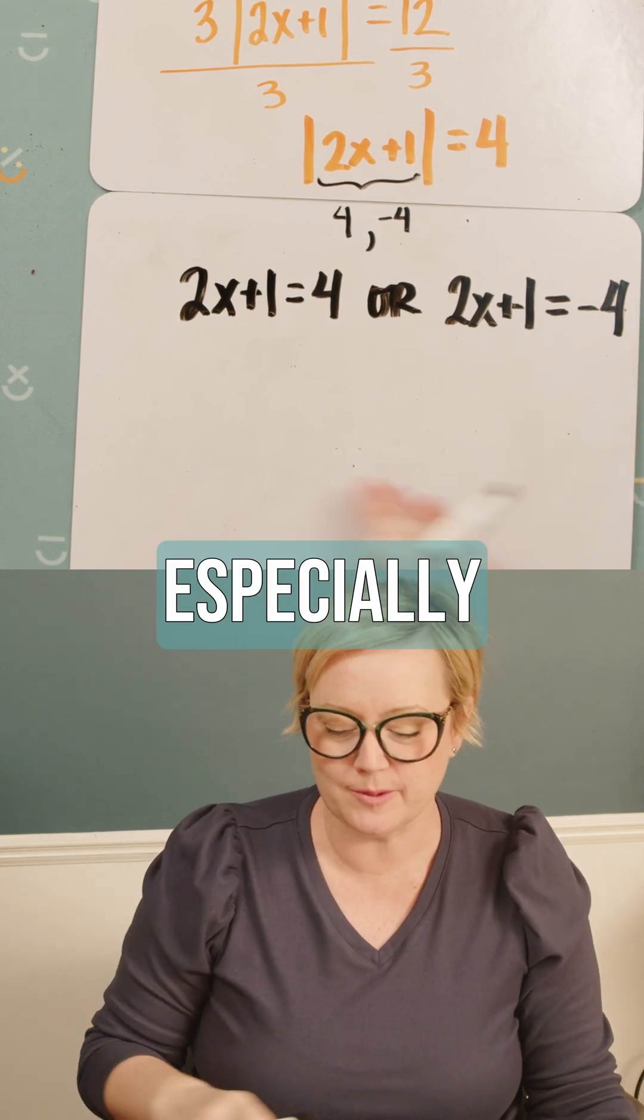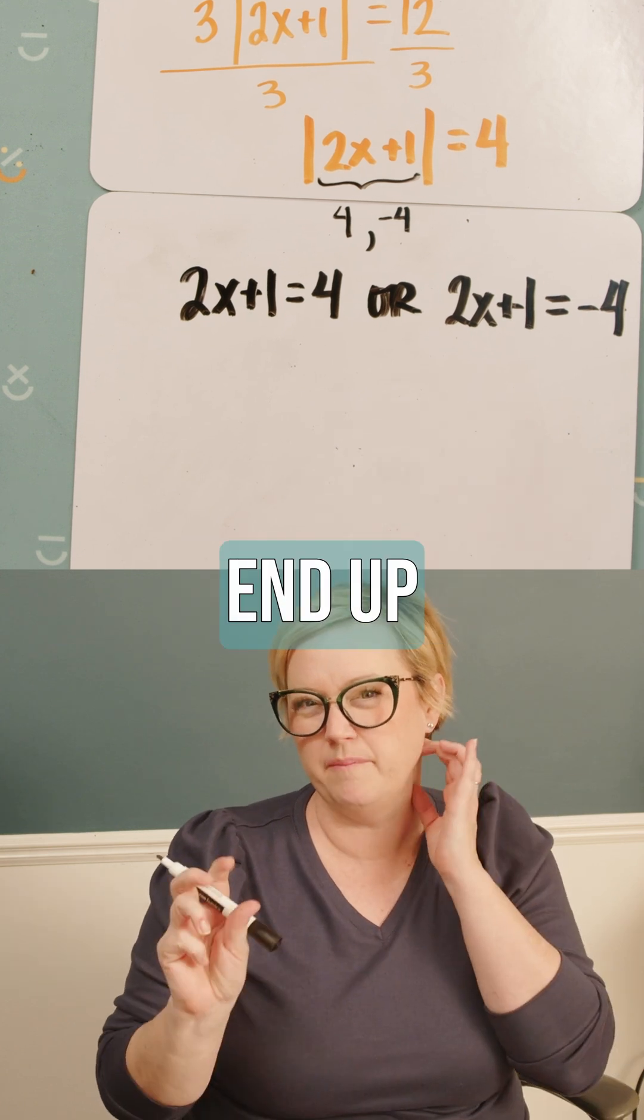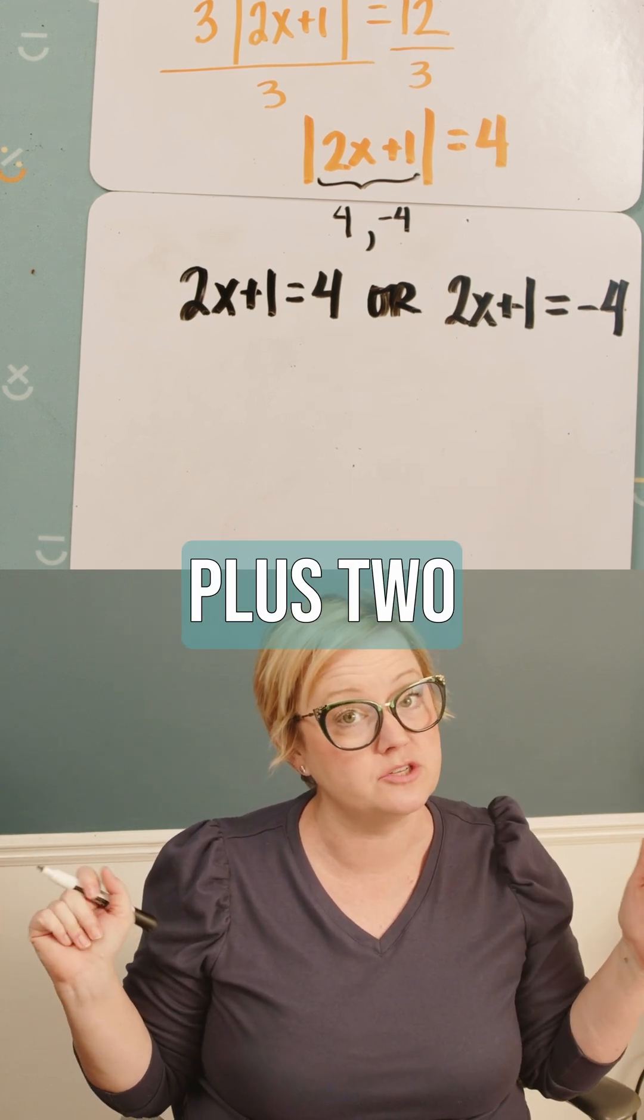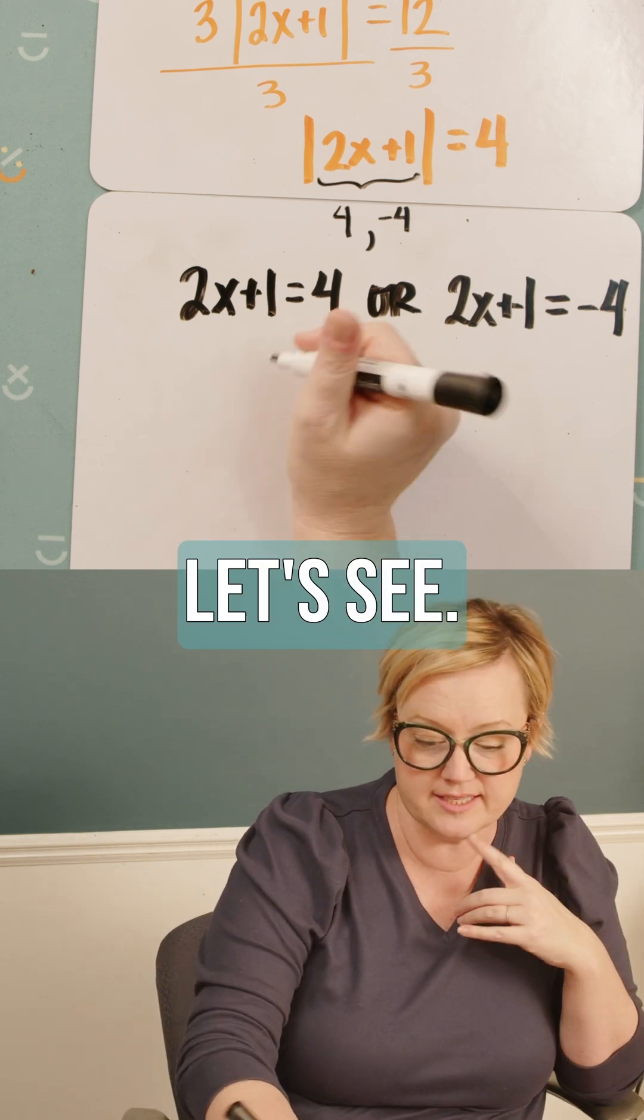But most of the time, especially when you're first learning absolute value equations, it's gonna end up being two answers. Now, they're not just like plus three minus three, plus two minus two. So let's solve these out and let's see.